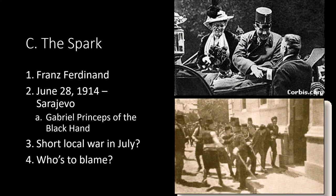Princip was caught and sentenced to 20 years. At this point, Austria-Hungary, with the backing of Germany, were more than willing to take a greater risk, hoping for a local war in July that would be over soon. Austria-Hungary blamed Serbia and issued an ultimatum to Serbia, which Serbia would reject, and then declared war. Russia mobilized its army to protect what it considered a sister nation. The answer to who is to blame for starting the Great War would be the Austro-Hungarian Empire.